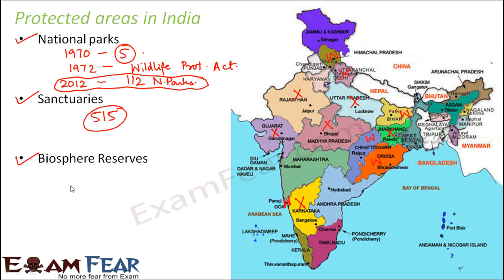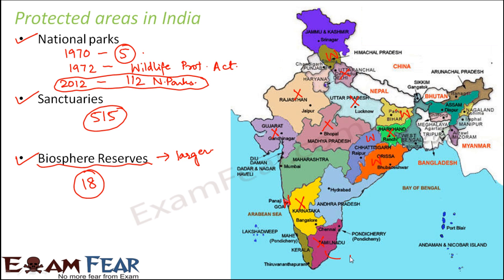Now when you talk about biosphere reserves, they are comparatively larger than national parks or wildlife sanctuaries. In fact, one biosphere reserve can include a few national parks or a few sanctuaries within it. So it is at a larger level. There are a total of 18 biosphere reserves in India. Some examples are the Nilgiri biosphere reserve present in Tamil Nadu.